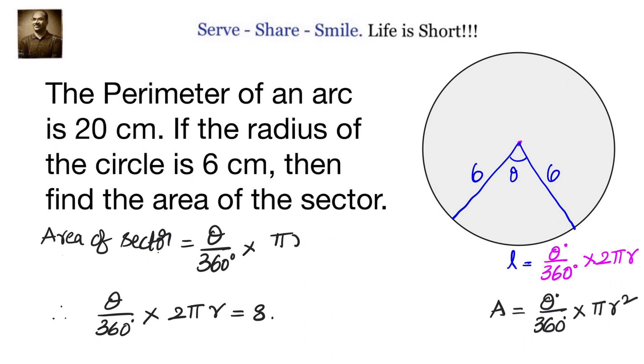That pi r square can be written as 2 pi r square by 2. Can we make it as 2 pi r square by 2?